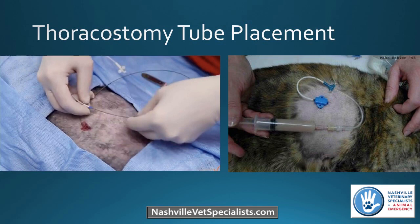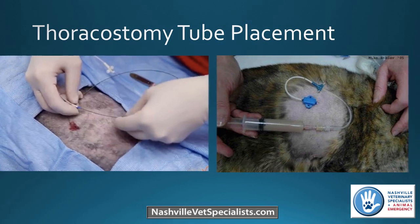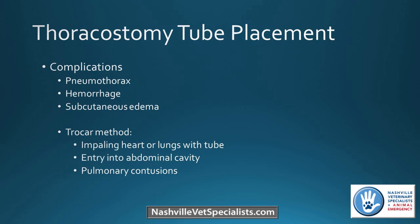These low-profile catheters are great for transudate fluid and for pneumothorax — air passes through easily. For pyothorax with thick exudative fluid, these may not be large enough and larger bore chest tubes would be used instead. Complications include pneumothorax, hemorrhage, and subcutaneous edema if the tube ends up in the subcutaneous space instead of the pleural cavity — a pretty common mistake. For the trocar method, complications can be more serious, like impaling the heart or lungs.